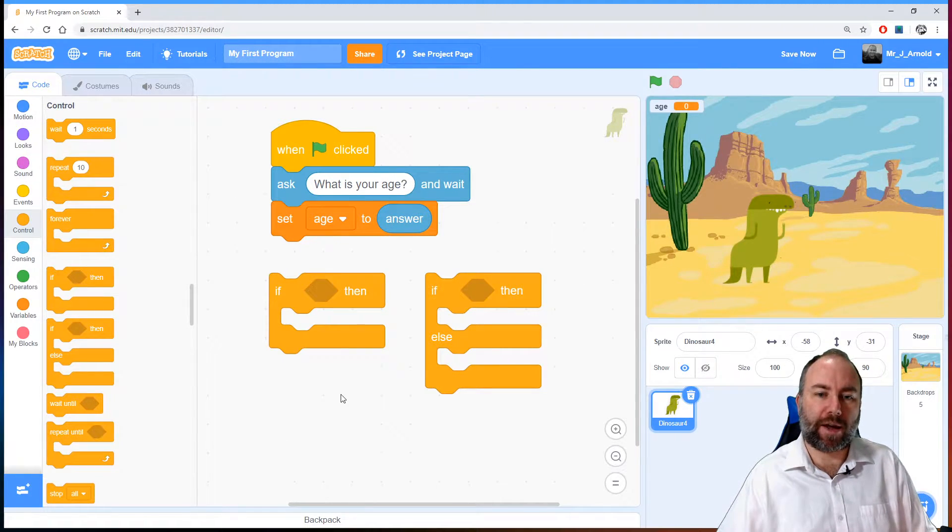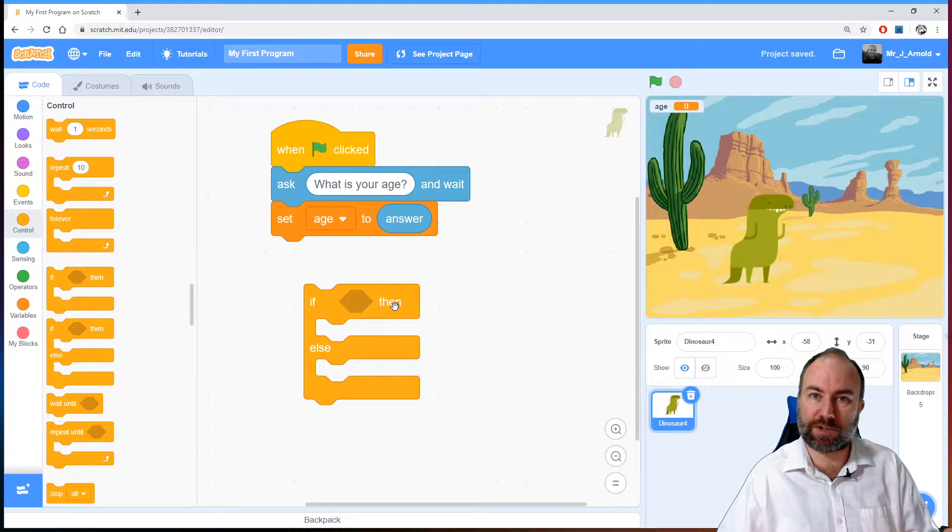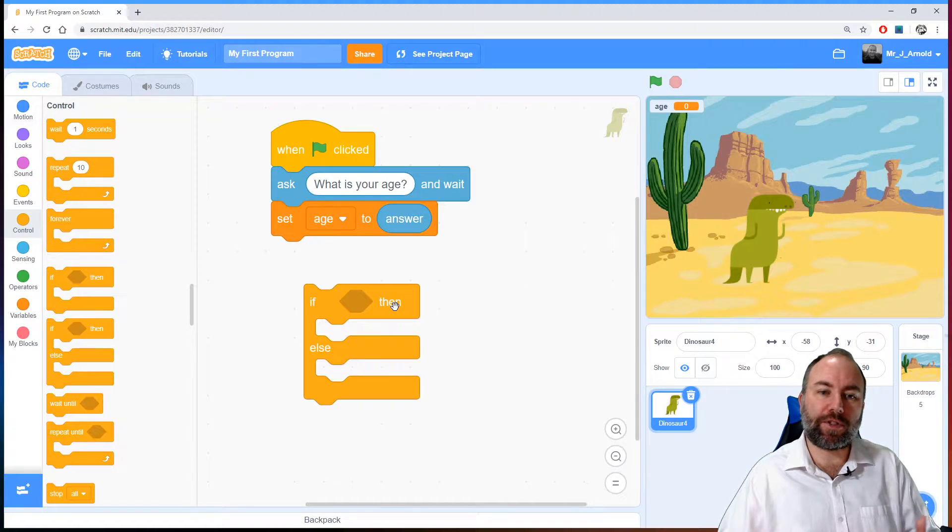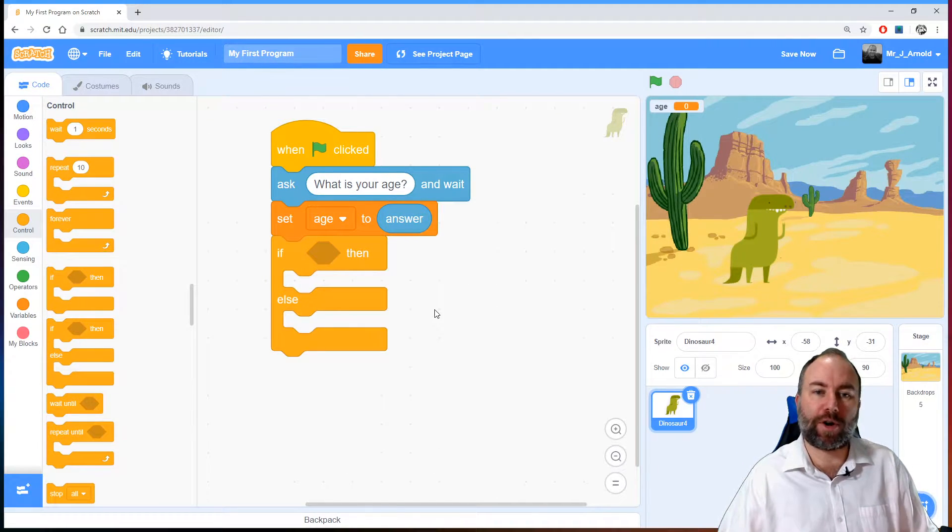So how do we do that? Well we're going to grab this block and get rid of it because we need to do one of two things. We either need to tell the user they're old or tell them they're young. It's going to be one of those two things. So let's grab that block and snap it to the rest of our code.